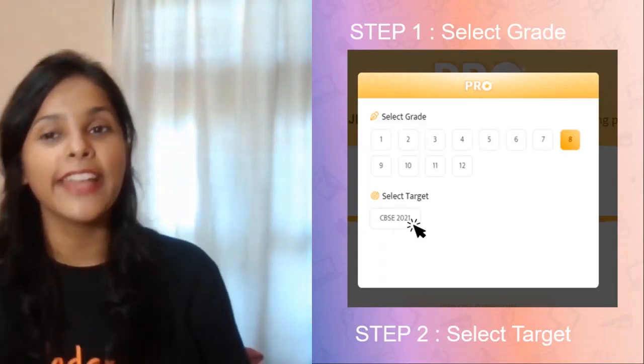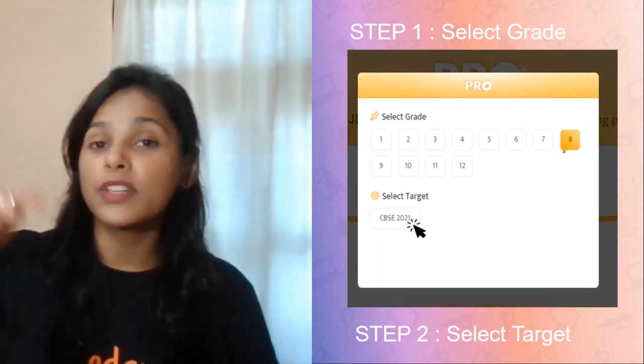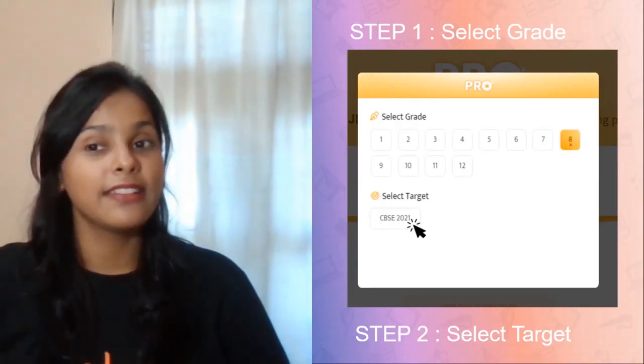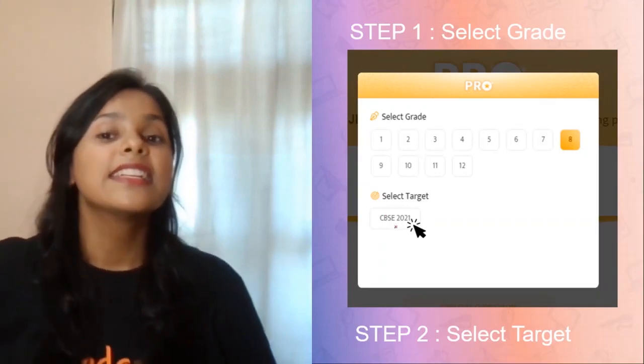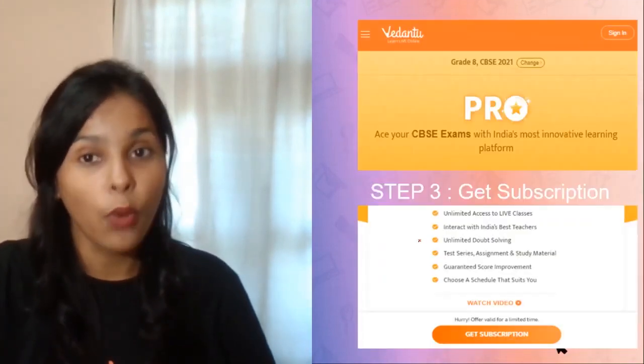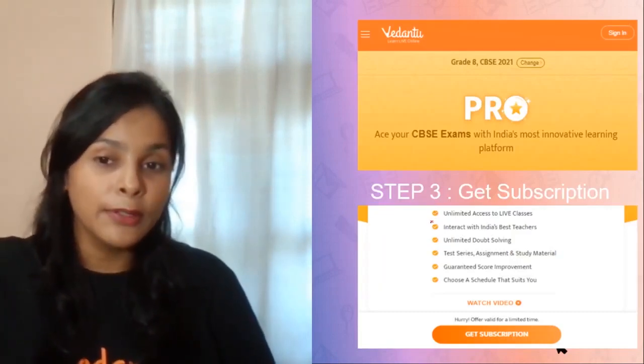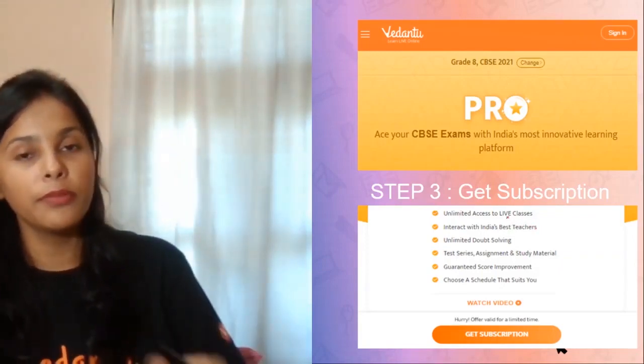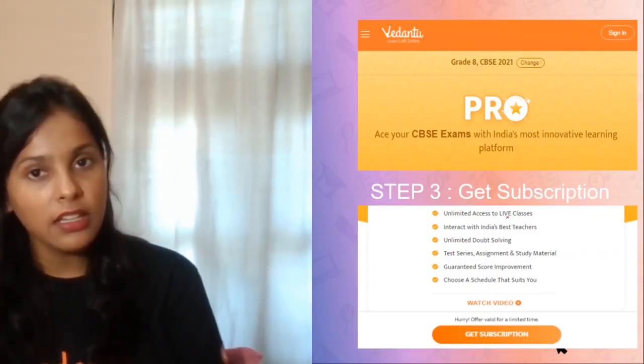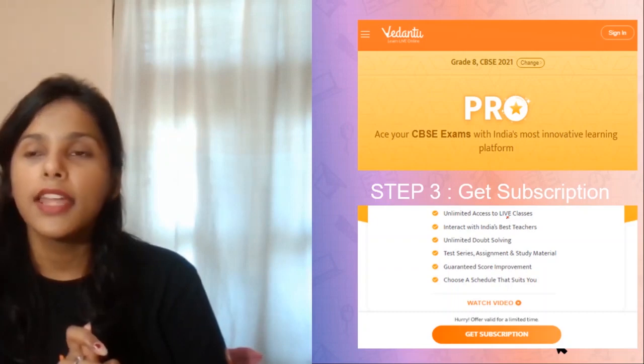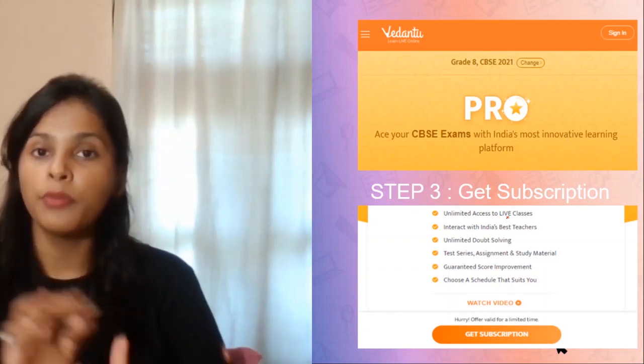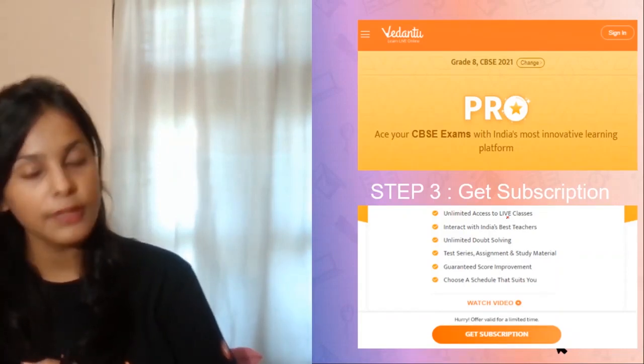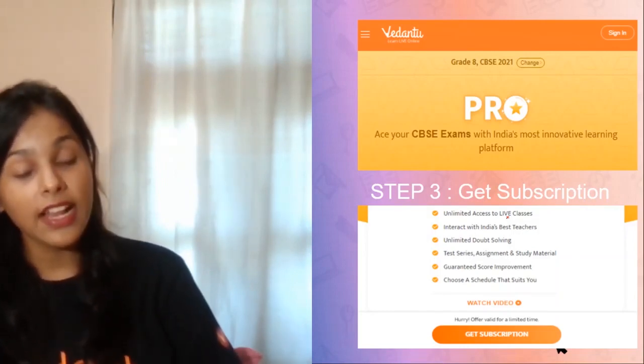Here are the steps. You have to go to the link which is given in the description box and click on the grade you are in, then select the targeted exam, that is CBSE 2021. Then you will be able to subscribe. You get unlimited access to live classes. If you have problems in any chapter, you can take up any modular course, meaning chapter-wise courses. If you want to cover all the syllabus at one go by one teacher, there's a long-term course also for you.